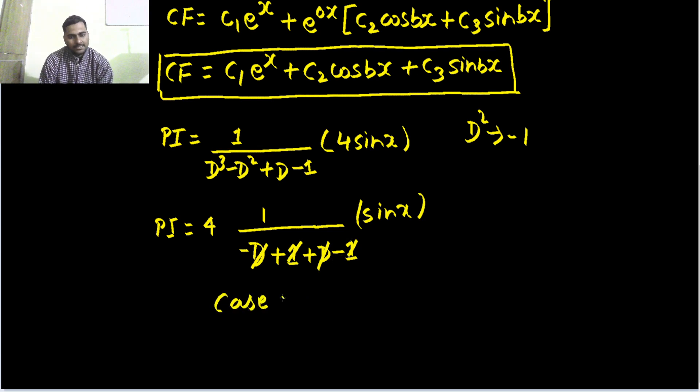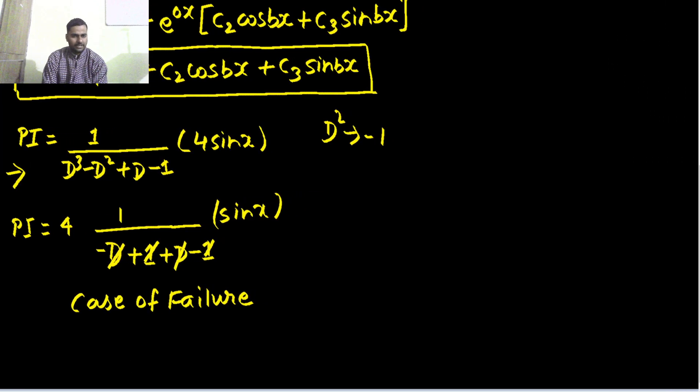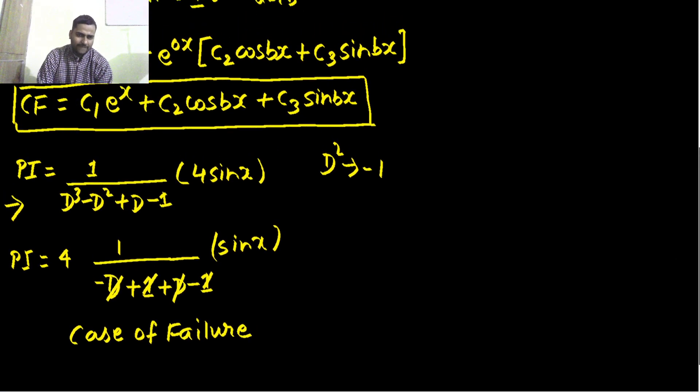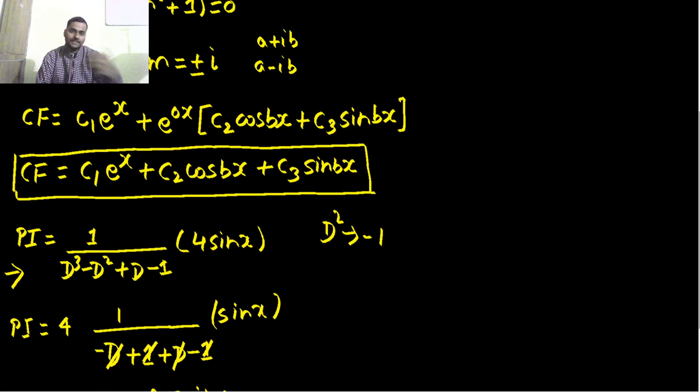So what we do in case denominator becomes 0? If we go back to the previous step, what we do is we differentiate the function of D whatever we are having and at the same time we multiply by x outside the operator.